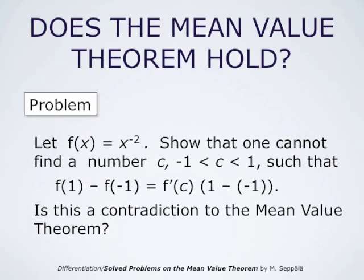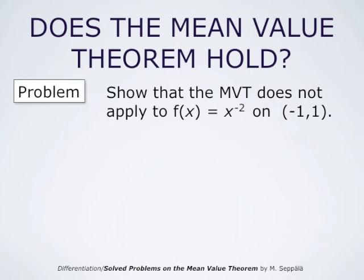Consider the function f(x) equals x to the power negative 2. Our task is to show that one cannot find a number c between negative 1 and 1 such that the statement of the mean value theorem applies to this function over the interval from negative 1 to 1 — that is, we cannot find c such that f(1) minus f(-1) equals f'(c) times (1 minus (-1)). Then the question is whether this is a contradiction to the mean value theorem. We have to show that the mean value theorem does not apply to x to the power negative 2 on the interval from negative 1 to 1.